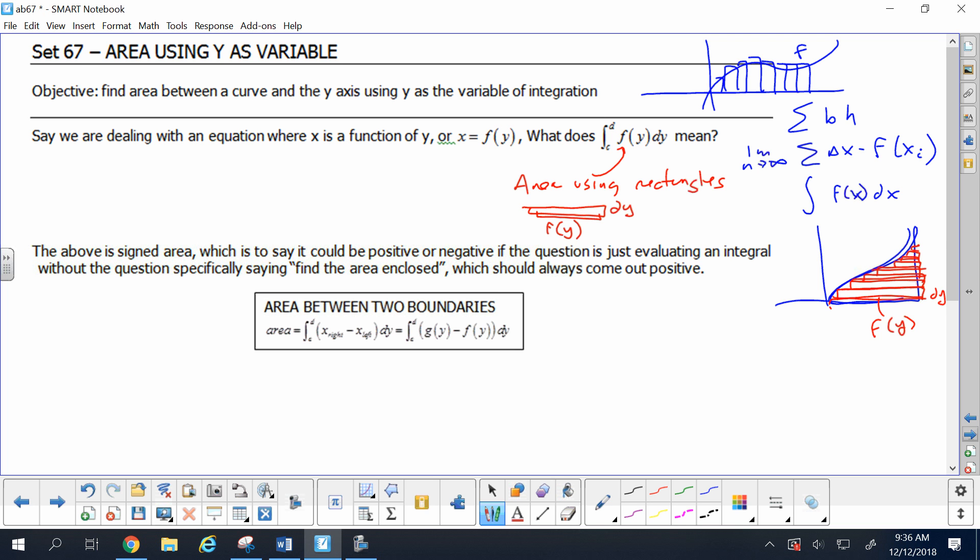What does this mean? That's area using rectangles this way, where the height is dy, and the base is the function written in y terms. Think of it like how wide it is is really like x, and x the equation in y terms are solved for in terms of y. The signed area needs to be positive.